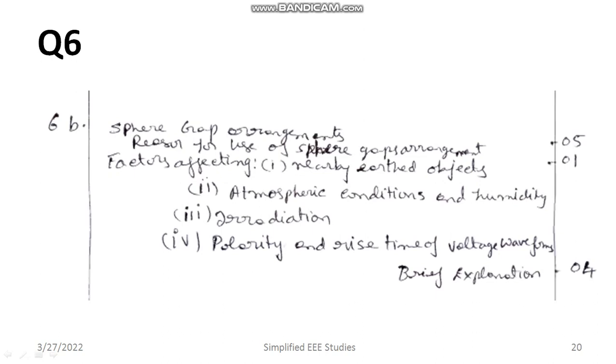Then need for sphere gap arrangement one. Then what are the factors affecting the sphere gap arrangement and the dielectric breakdown, like atmospheric conditions, like humidity, irradiations and polarity and rise time of voltage waveform. Likewise you can mention. Total weightage is ten marks.